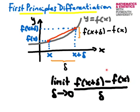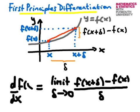So we say that the limit as delta approaches zero of this ratio is going to be equal to the derivative d by dx of f of x. This is our definition of the derivative, and this is what we are going to use to calculate a couple of simple examples. I'll go on to a new slide to do this.